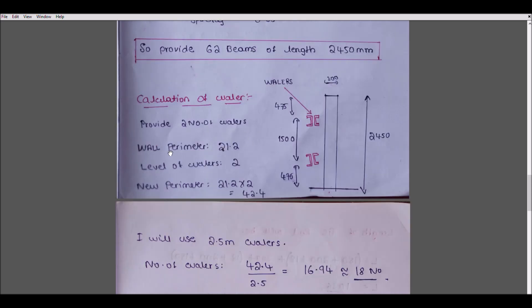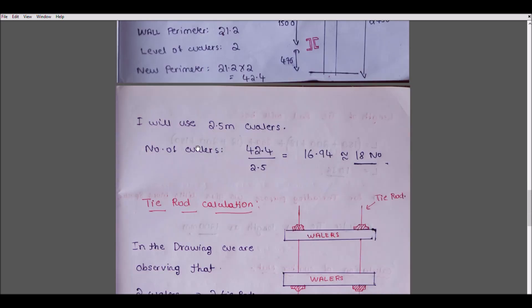So provide two levels of wailers. The quantity of wailers—we have two levels. For one level, the perimeter is 21.2 meters; for two levels, 42.4 meters. I will consider 2.5-meter wailers. If you have different types, you have to divide accordingly. I will get 18 numbers of wailers.